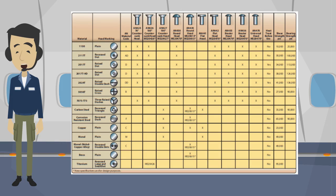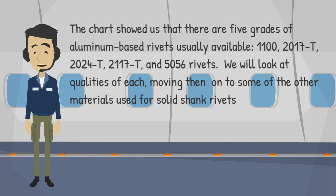The vast majority of solid shank rivets are made of aluminum or aluminum alloy of various compositions. It is important to know how to tell them apart by looking at the material they are made of and the markings on their head and the AN material code. There are five grades of aluminum-based rivets usually available: 1100, 2017-T, 2024-T, 2117-T, and 5056 rivets.